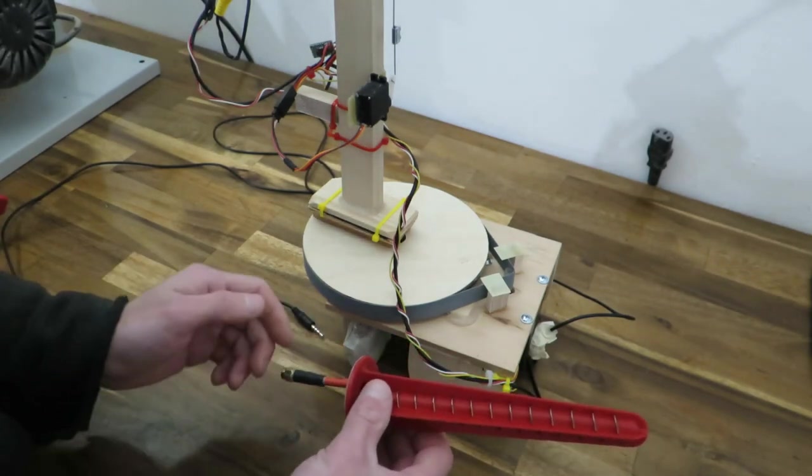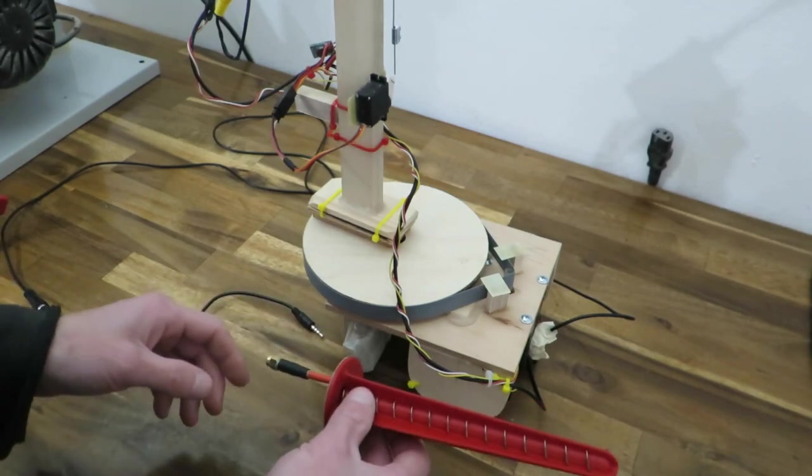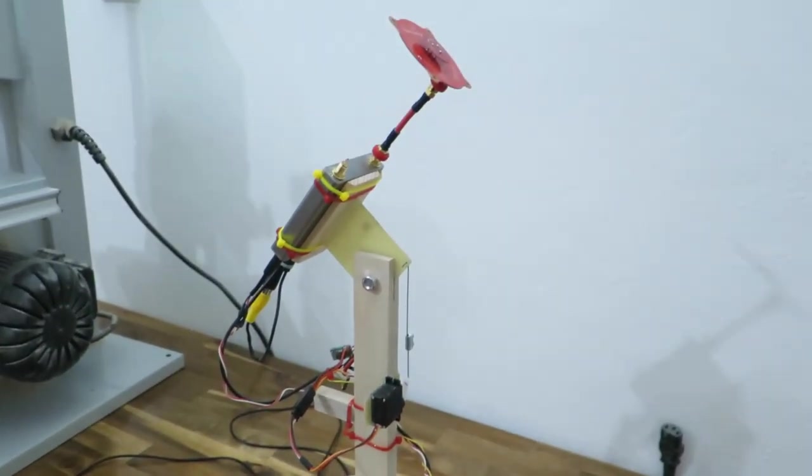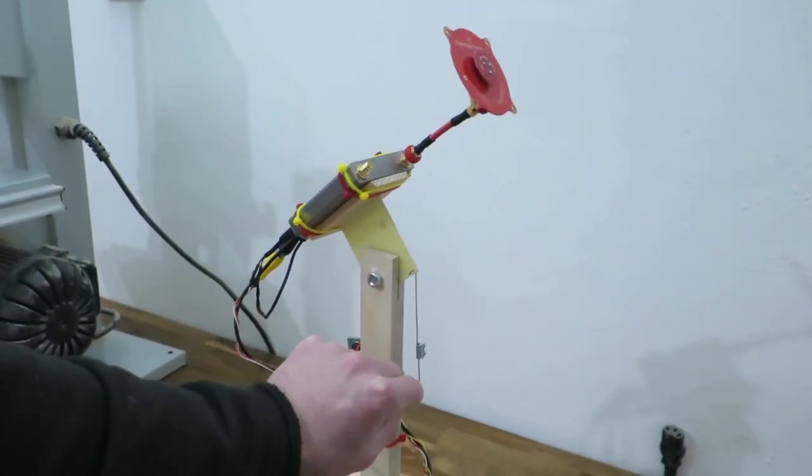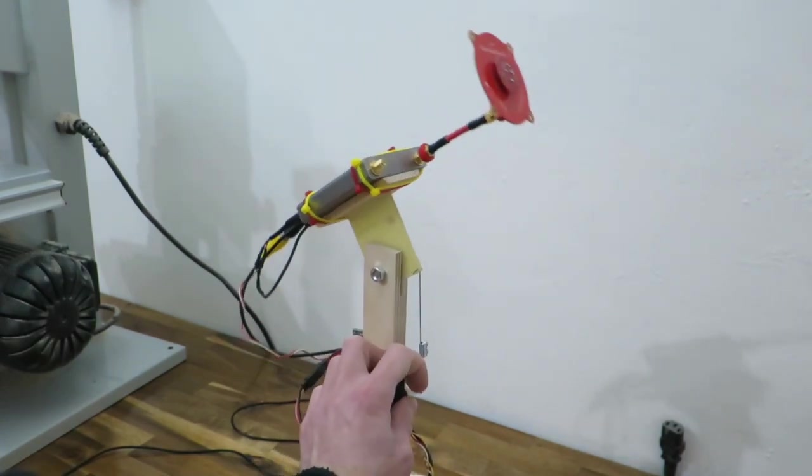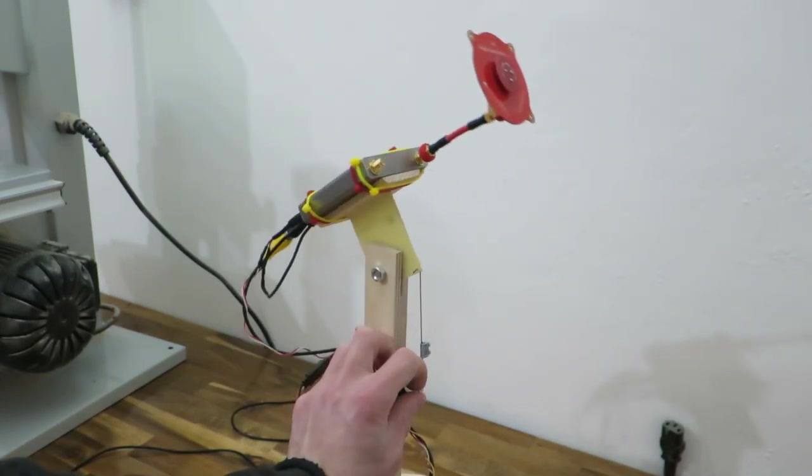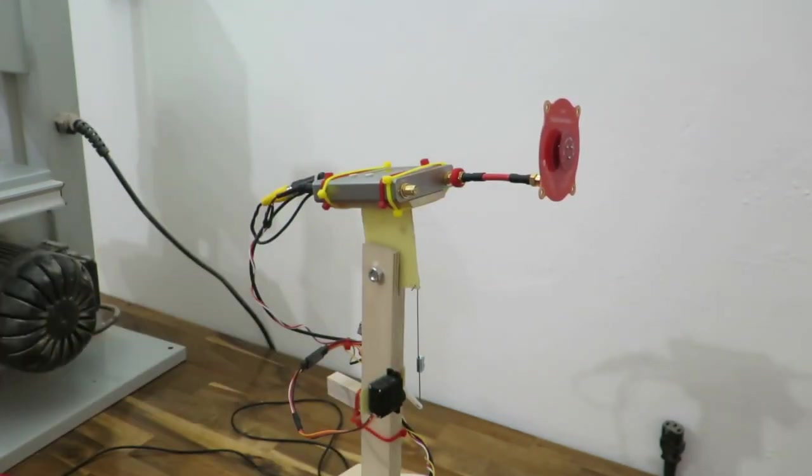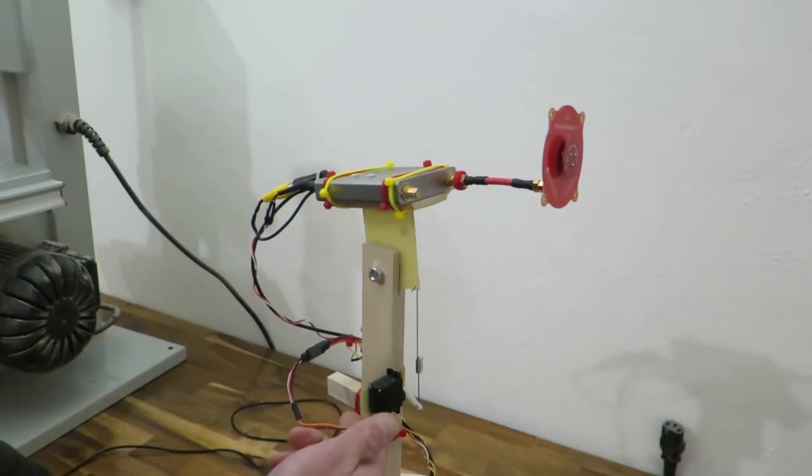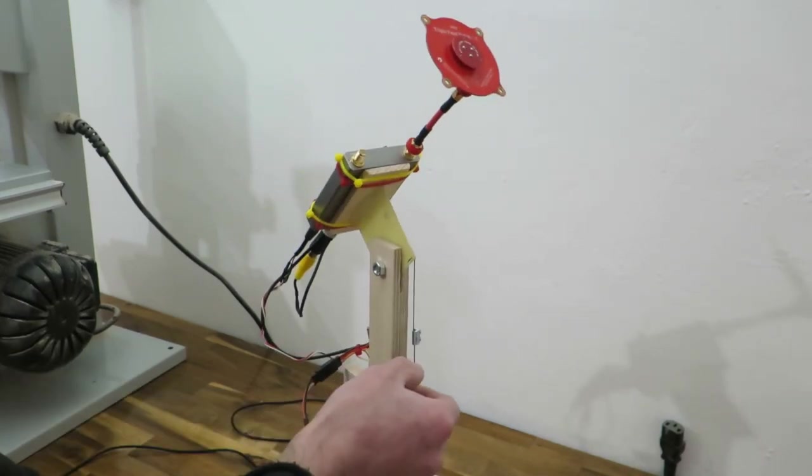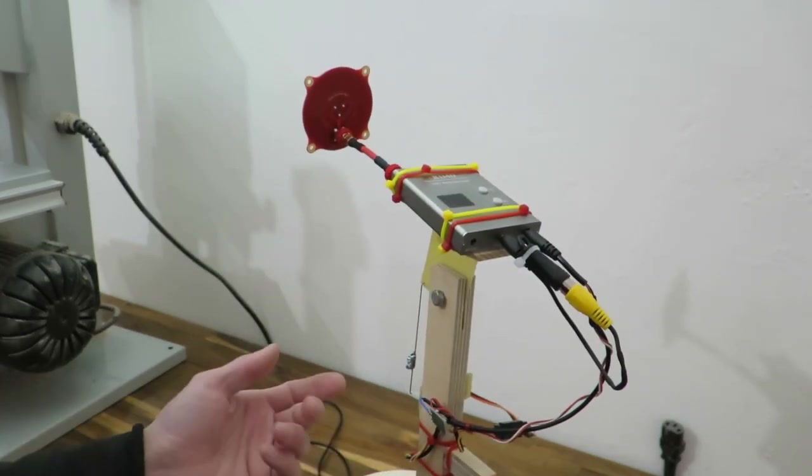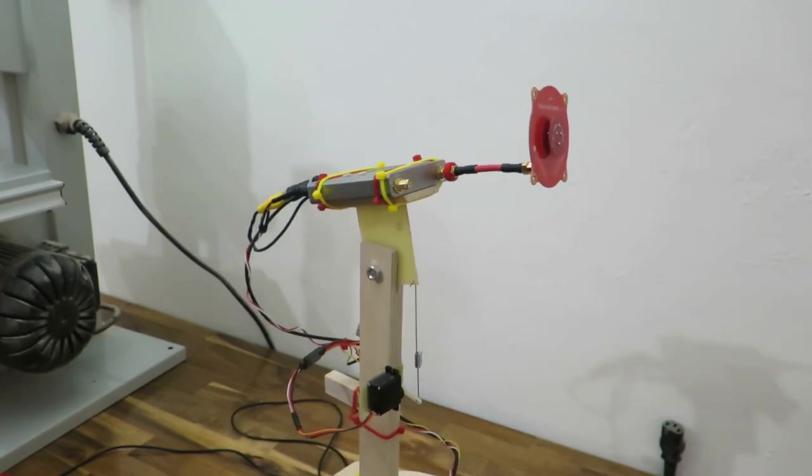I attached this big arm here with a servo and linkage. It's not a very good mechanical connection but it works. It will point to the correct angle vertically. This small servo is good enough, and there's a voltage regulator here.